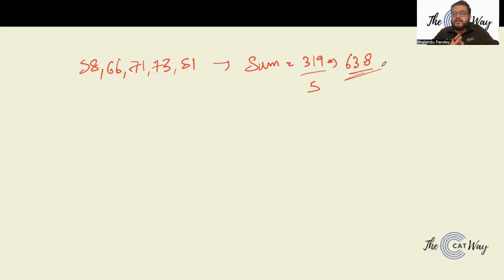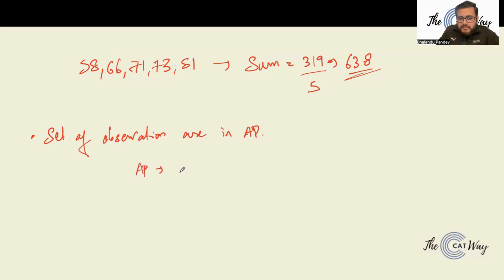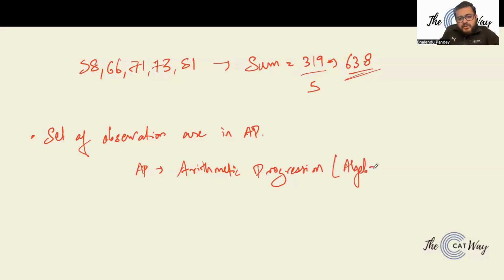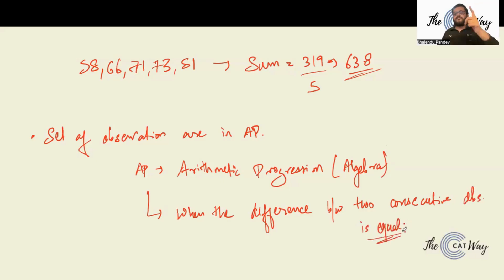Average is a very simple concept. Sometimes your set of observations are in AP — arithmetic progression. AP simply means the difference between two consecutive observations is equal, forming an AP series.